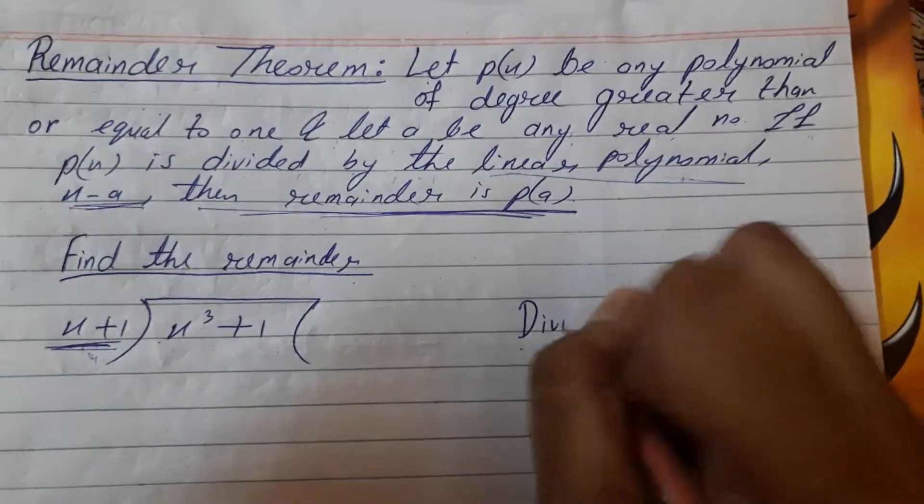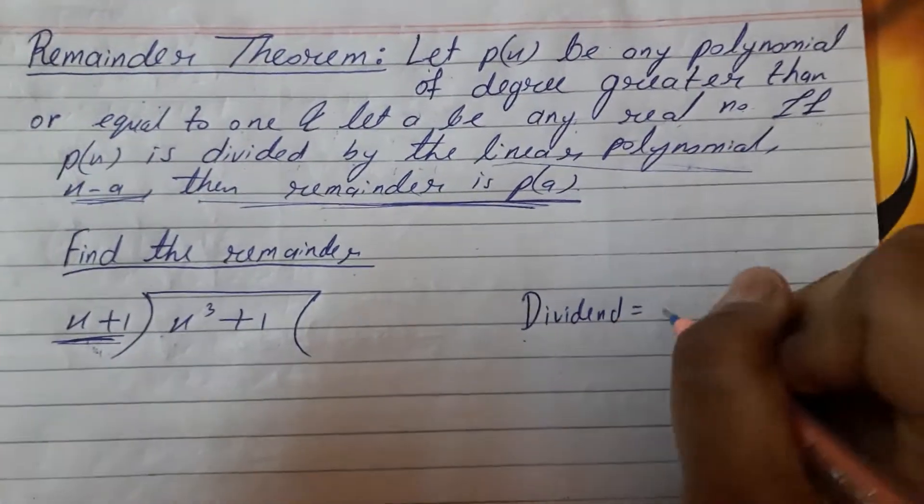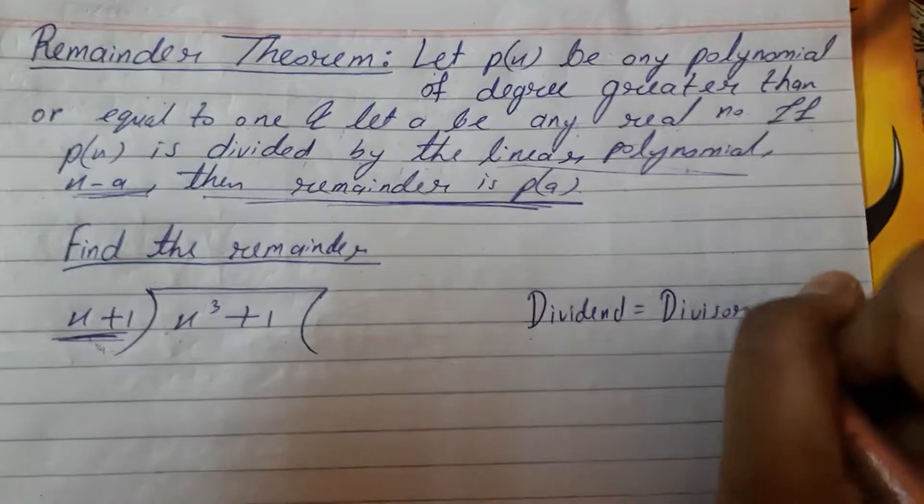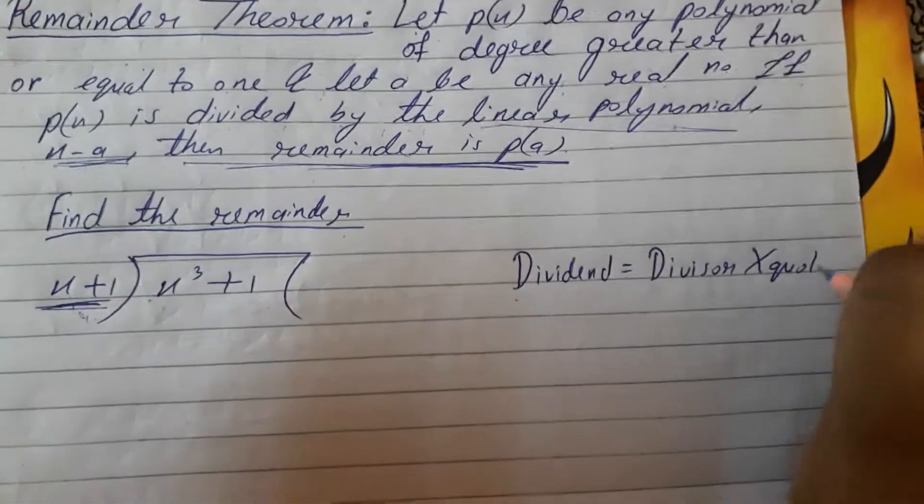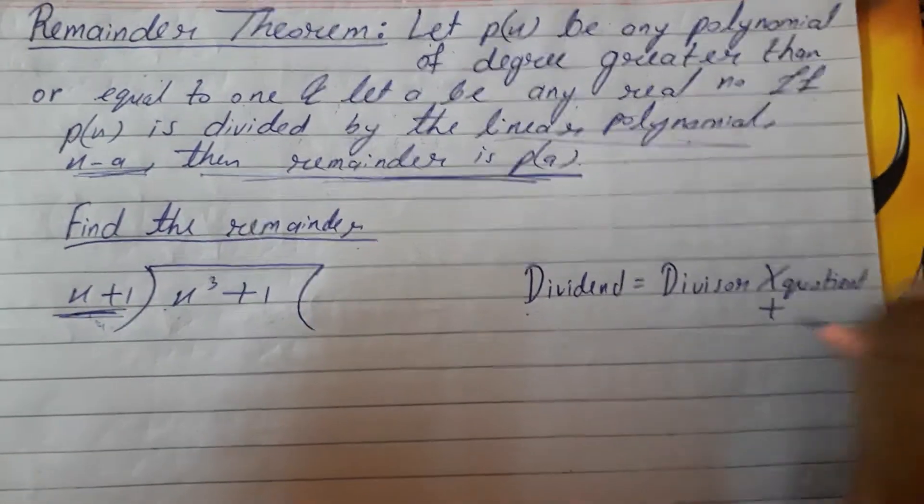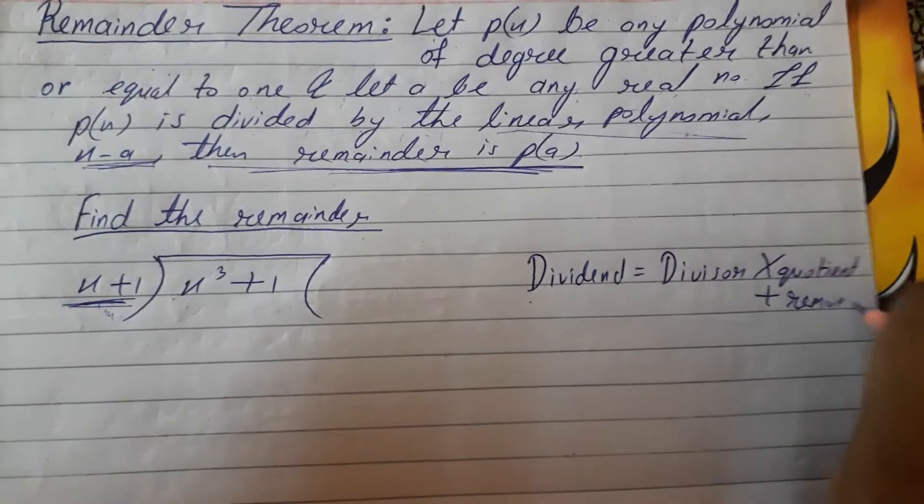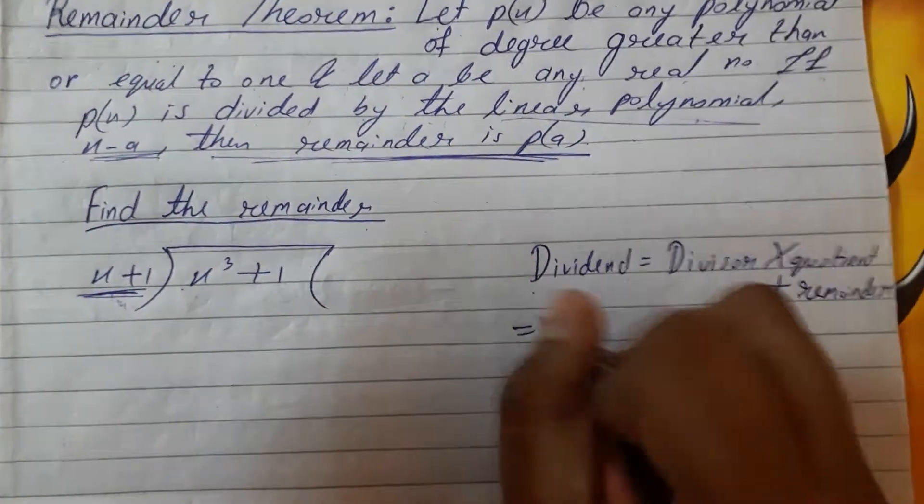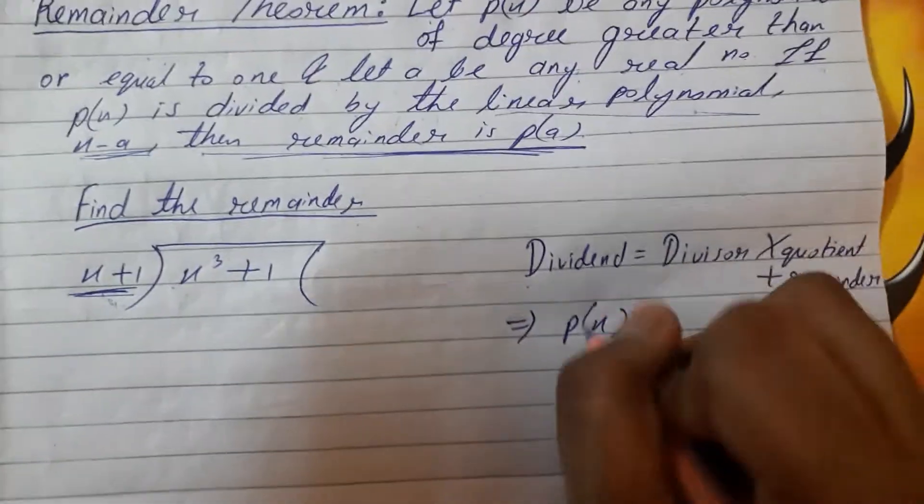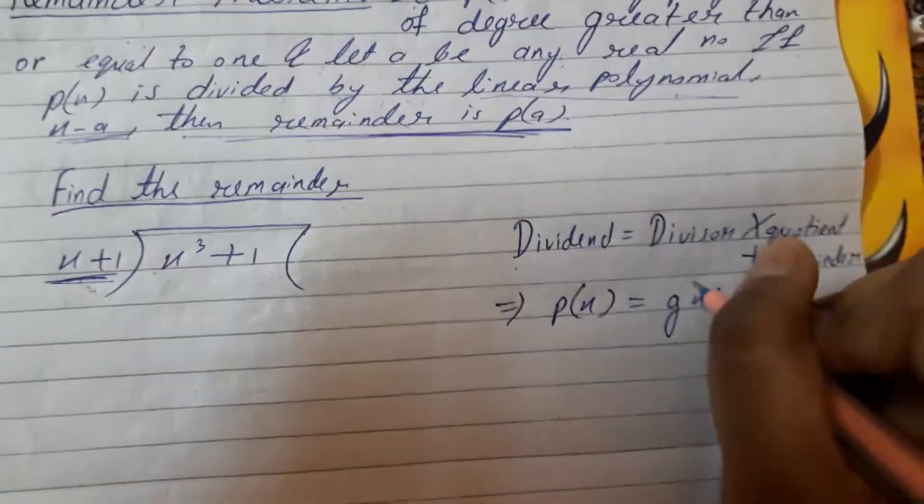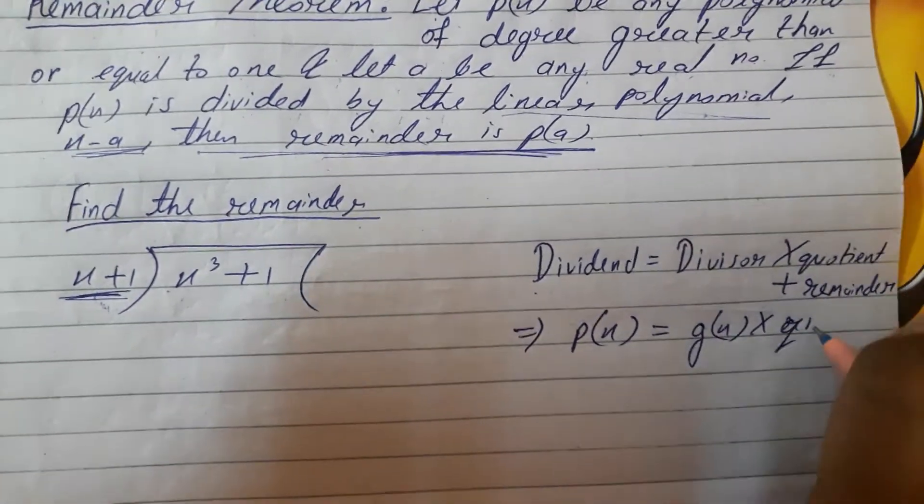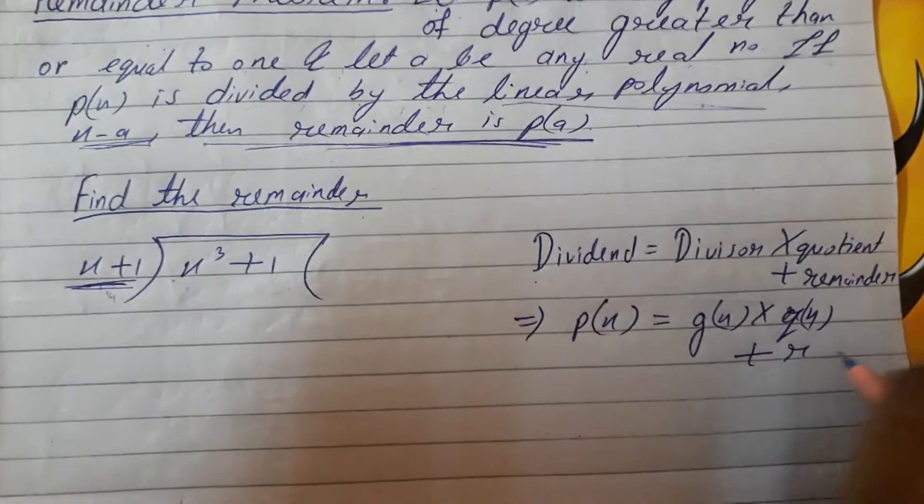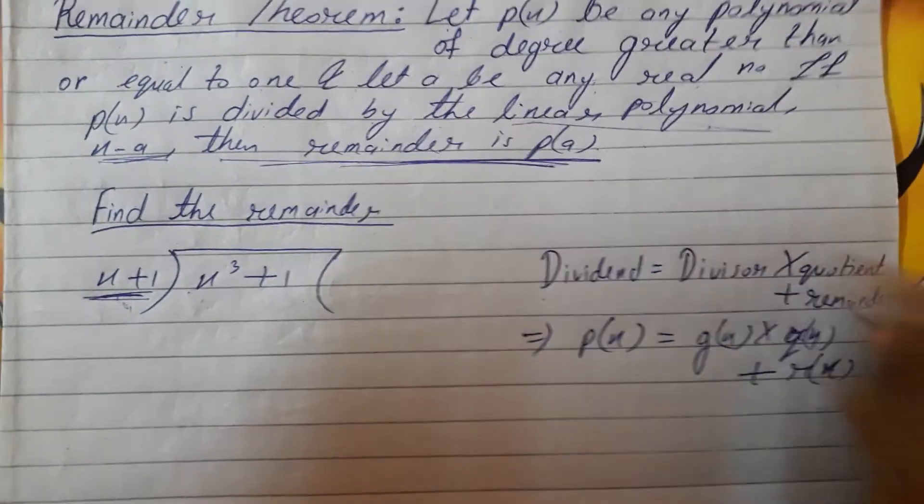So p(x) equals g(x) times q(x) plus r(x). Now, first you divide.